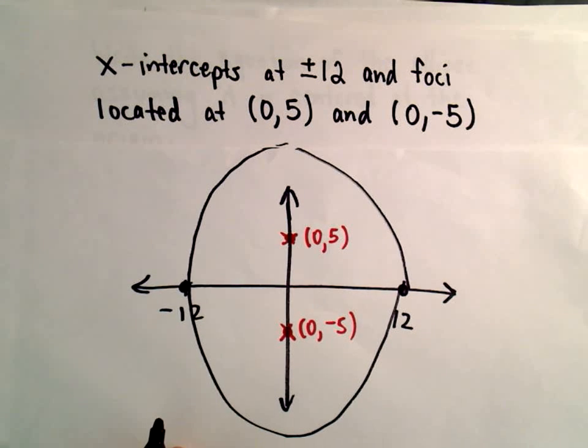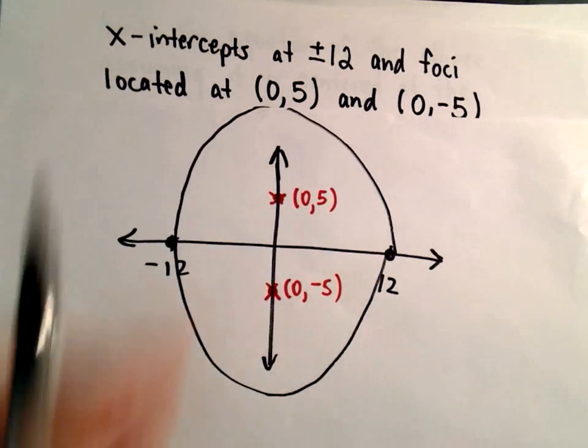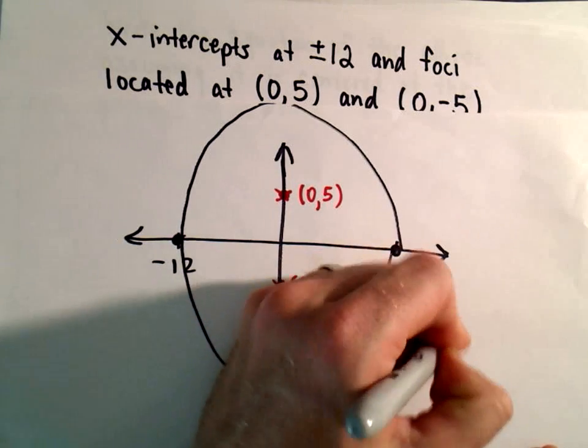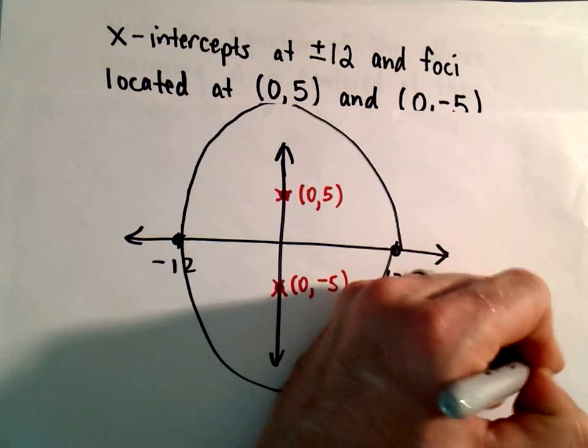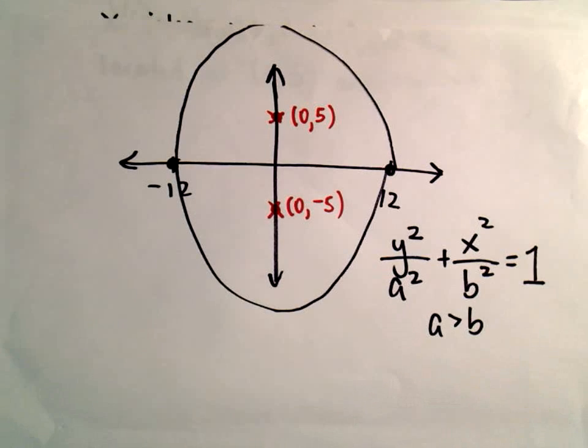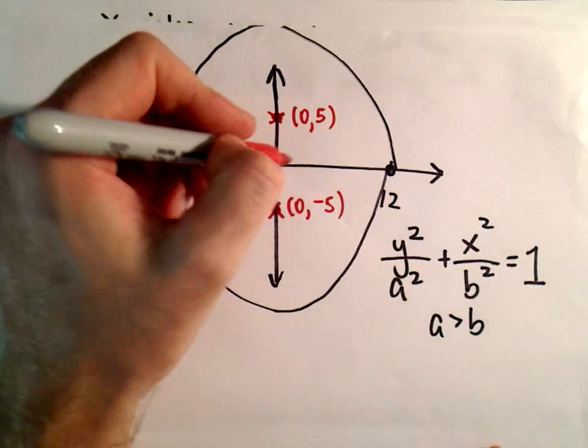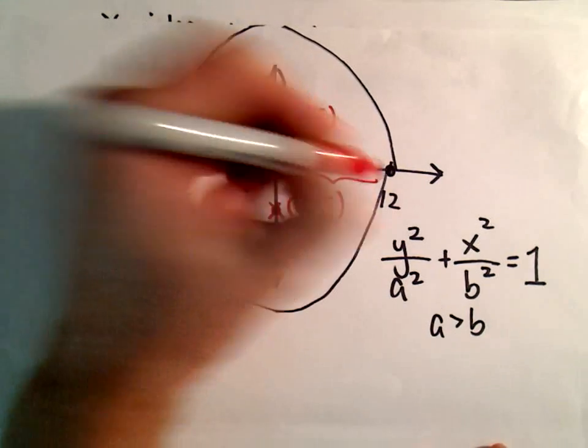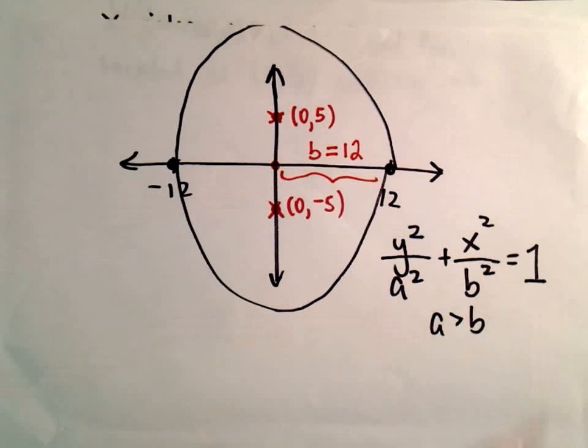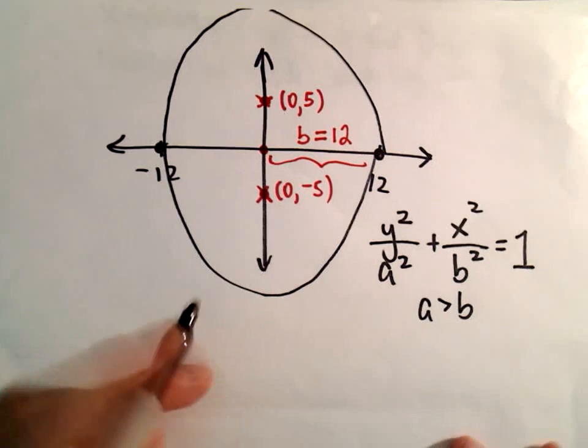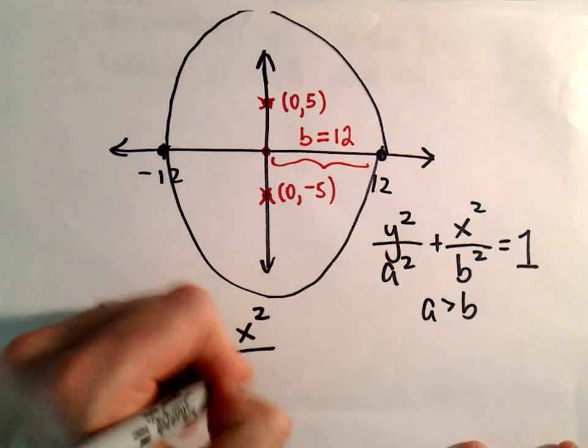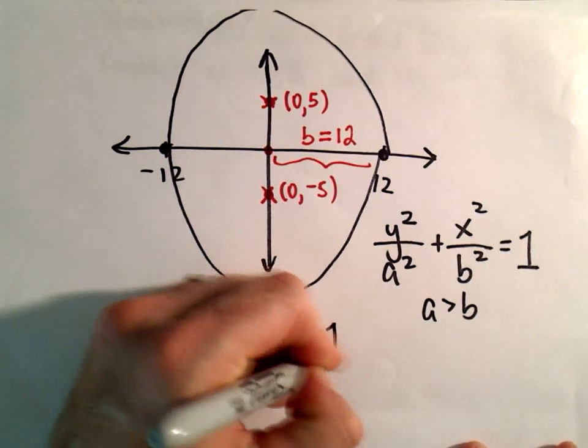So a couple things here. Since I know the major axis is vertical, it's going to be of the form y²/a² + x²/b² = 1, where a is greater than b. Now we talked about how to find the b value—it's just the distance from the origin to one of our co-vertices. So in this case our b value is going to equal positive 12. We can already fill that in, so we've got y²/a² + x²/12² = 1.